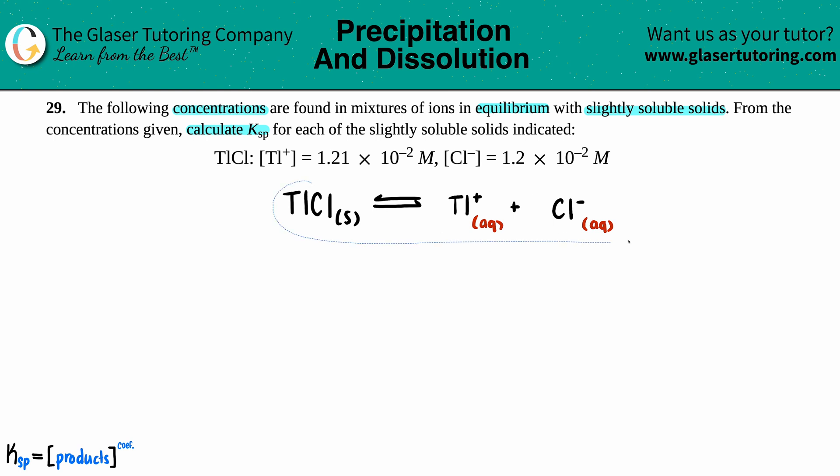Next, I'm just going to write out the numbers that they gave us. So they told us that the Tl+ concentration is 1.21 times 10 to the negative second molarity, and the Cl- is 1.2 times 10 to the negative second molarity. Cool.